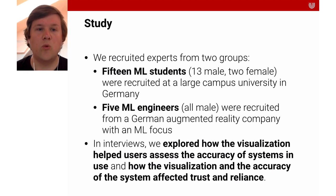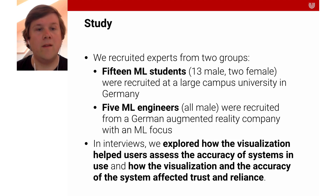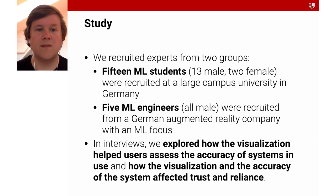For the study, we recruited experts from two groups: 15 machine learning students — 13 male and two female — recruited at a large campus university in Germany, and five machine learning engineers, all male, recruited from a German augmented reality company with a machine learning focus. In interviews, we explored how the visualization helped users assess the accuracy of systems in use and how the visualization and accuracy affected trust and reliance. We coded the qualitative data using an inductive approach, reading the raw data in detail and clustering textual quotations to identify emergent themes.